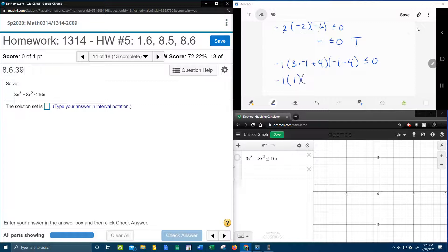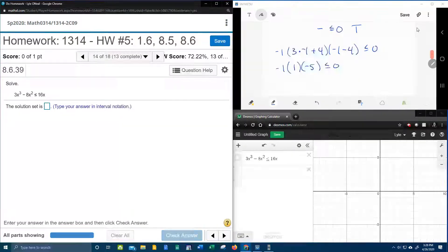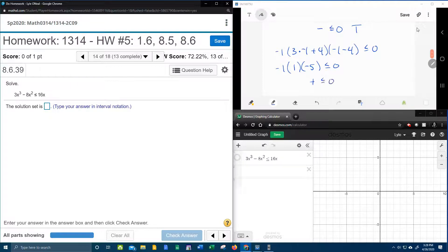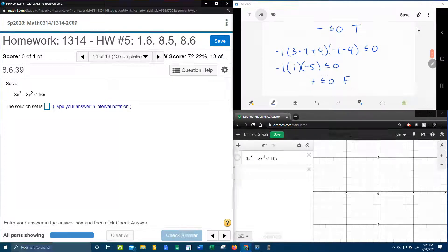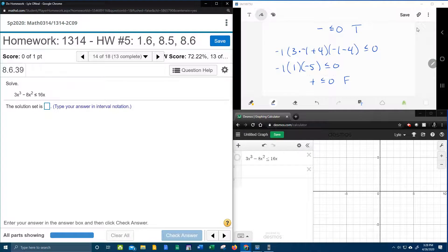So negative 1 times negative 3 plus 4, that's positive 1. And negative 5, and that is a negative times a positive times a negative, which is going to be, overall is going to be a positive, which is not less than or equal to 0. Positive numbers are not less than or equal to 0, that's false.